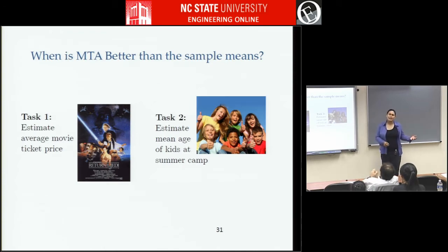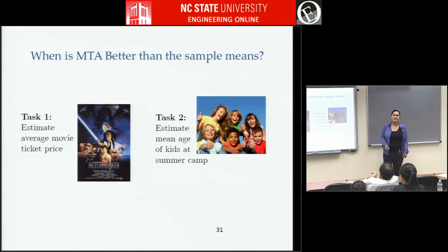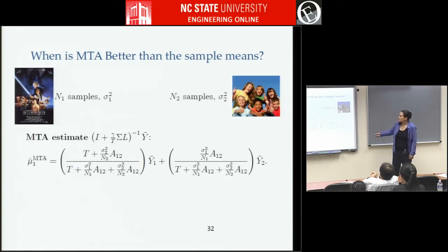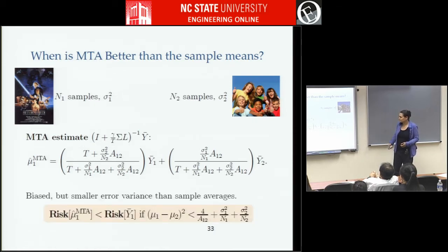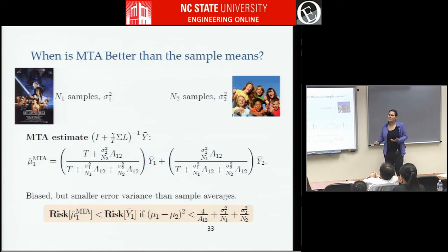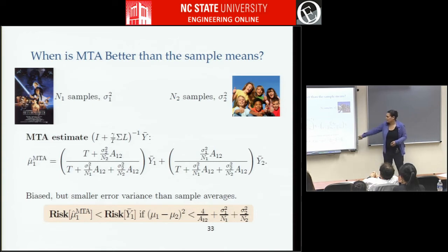Can we show that multitask averaging is ever better than just taking the sample means? For two tasks we can do this well analytically — we can take the closed-form solution, really compute the matrix inverse, and write out the estimates explicitly. They are indeed convex combinations of the two means. We then analyze the squared error and compare it to the squared error of just taking your sample averages.